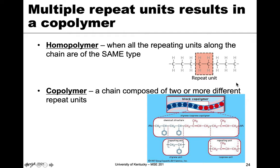We can also make polymers with multiple repeat units — maybe polyethylene here and polypropylene elsewhere. When we have two or more repeat units in a chain or polymer (it could also be a network), this is known as a copolymer. That's what's shown here with the styrene and isoprene — a styrene unit and an isoprene unit — so that's what a copolymer is.